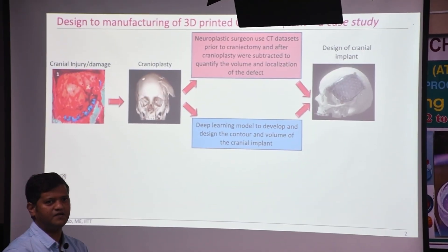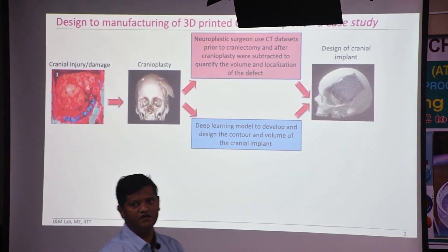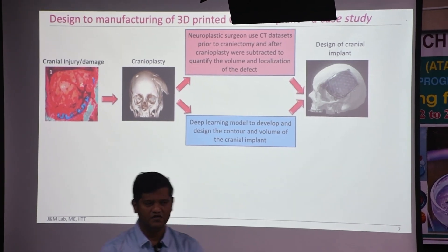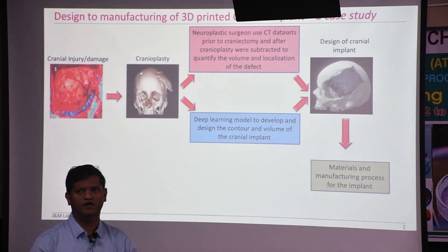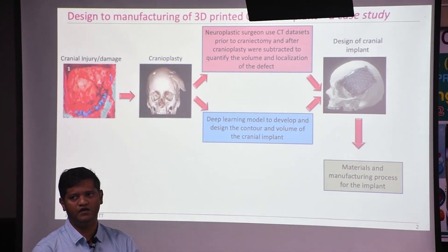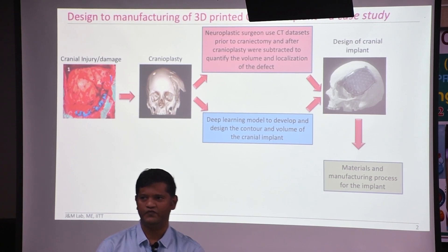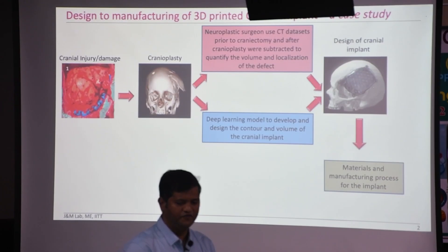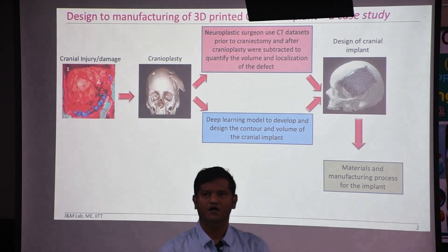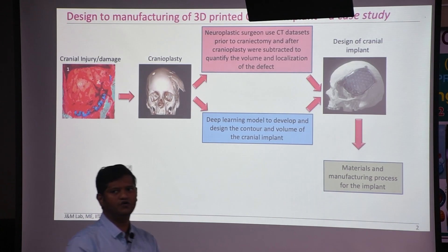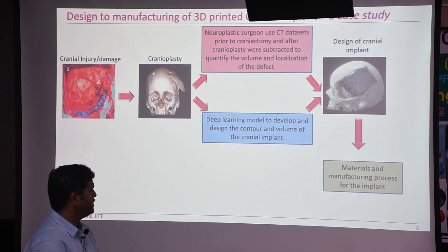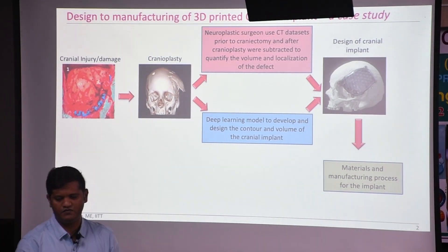Once the design is done, the next step is selecting suitable materials and manufacturing processes. Among various materials, in the present work we are concentrating on a biocompatible metallic material — titanium. For manufacturing, we have chosen 3D printing, specifically selective laser melting, which is a powder fusion process. The design in STL file format is communicated to the machine, which then 3D prints the implant.